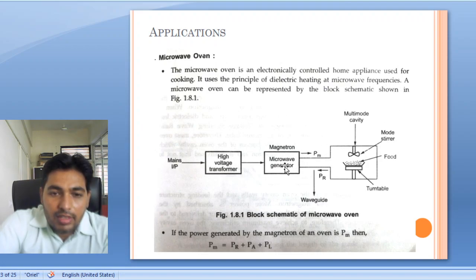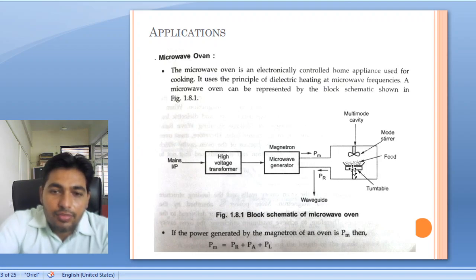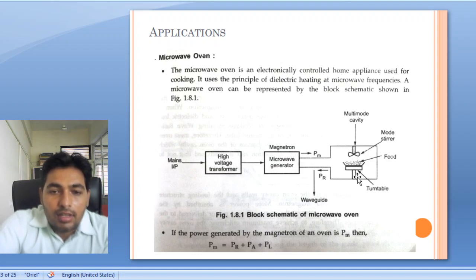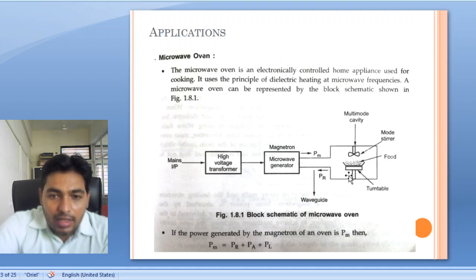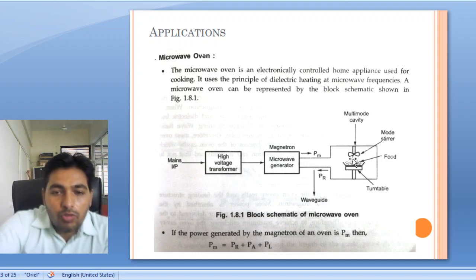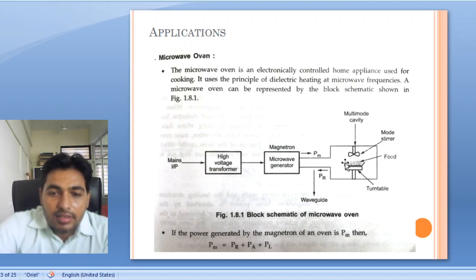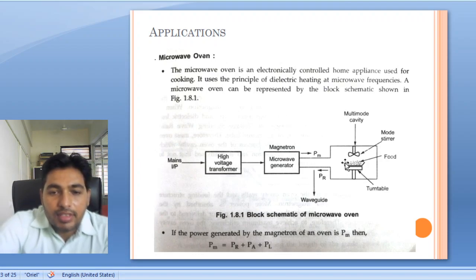The microwave signal generated from the magnetron goes to the multimode cavity, and the food placed there has its molecules trying to align with the signal, producing friction and heating internally.